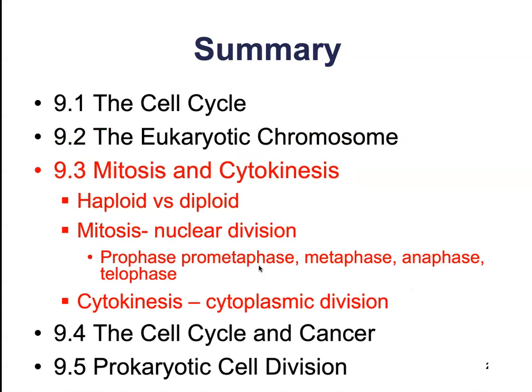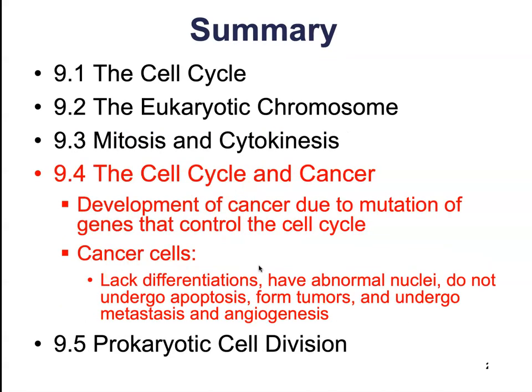We went into mitosis and cytokinesis and talked a little about haploid versus diploid — we'll hit that topic hard in the next chapter, so it's not a priority for this week's quiz. You do want to review mitosis and its phases: prophase, prometaphase, metaphase, anaphase, and telophase. Then cytokinesis, our cytoplasmic division. Make sure you review the differences between animal and plant cell cytokinesis.